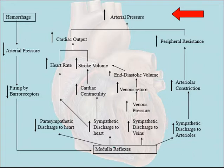Let's increase sympathetic discharge to the veins. That's going to cause venous pressure to go up. That will increase venous return. And that will increase end-diastolic volume, increasing stroke volume. So these factors are going to affect cardiac output — increased heart rate, increased stroke volume — we increase cardiac output.